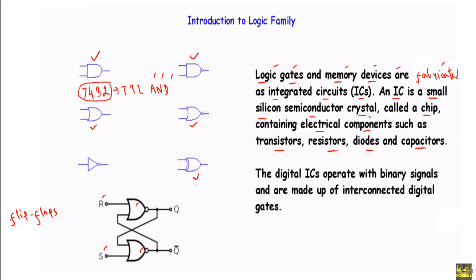To specify the logic levels in digital circuits, we use binary signals. That means we have to deal with two different logic levels: Level 0, also called the low state, and Level 1, also called the high state.